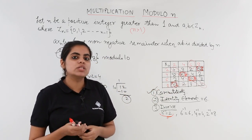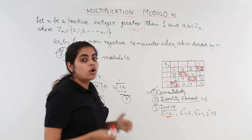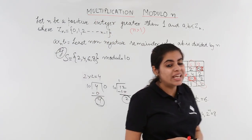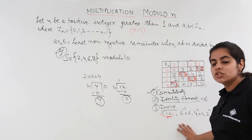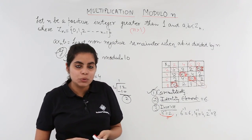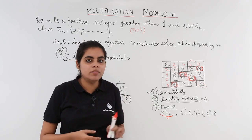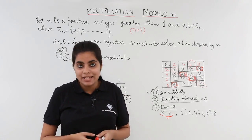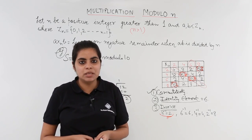So in this video, we saw what do you mean by multiplication modulo. We also saw how to frame the composition table for the same. The composition table had some elements which we listed down. We found out how to check commutativity, associativity can be done by solving. So we didn't do that. But yes, we found out the identity element and the inverse from the table itself.